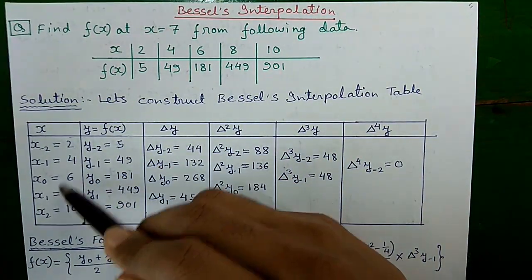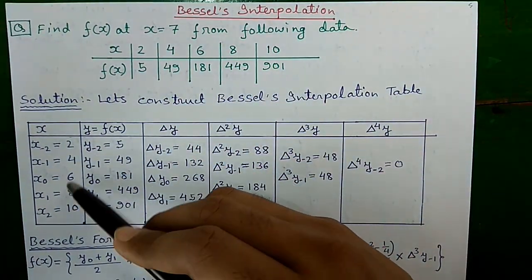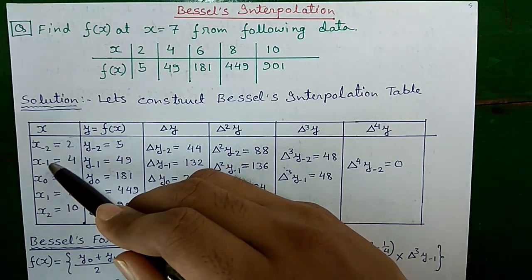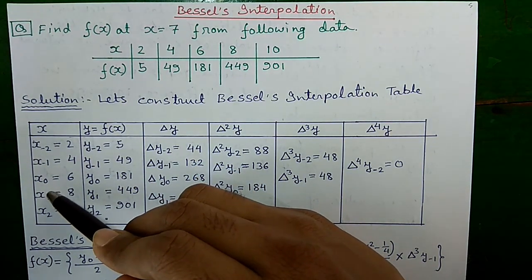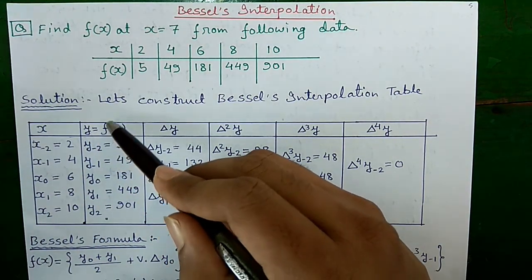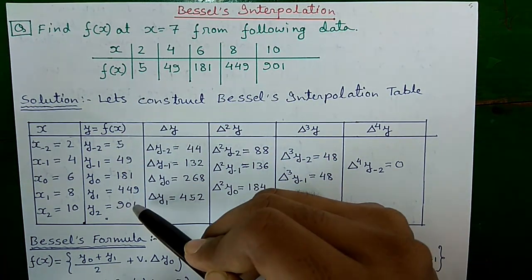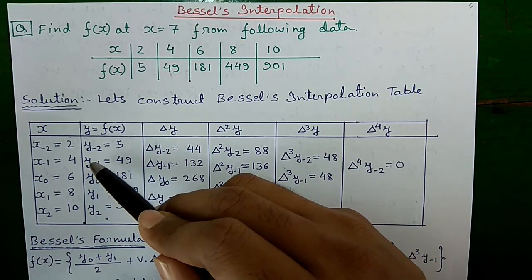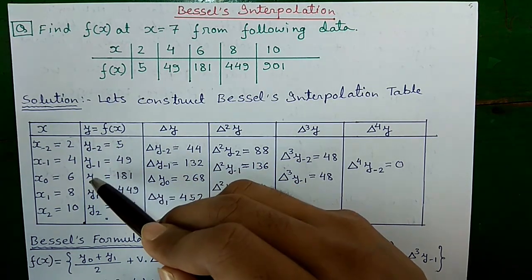In the x column, write down all x values starting from 2 to 10. The middle value of x will be x₀; values above x₀ will be x₋₁, x₋₂, and so on; values below x₀ will be x₁, x₂, and so on. Next, in the y or f(x) column, write down all f(x) values. The value corresponding to x₀ will be y₀; values above y₀ will be y₋₁, y₋₂; values below y₀ will be y₁, y₂, and so on.